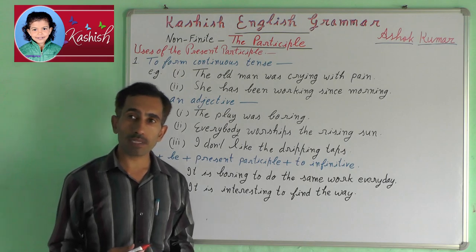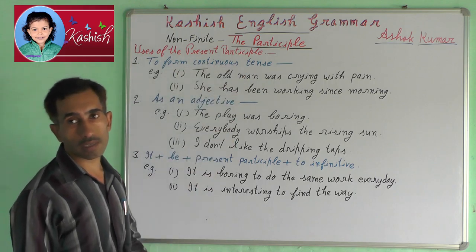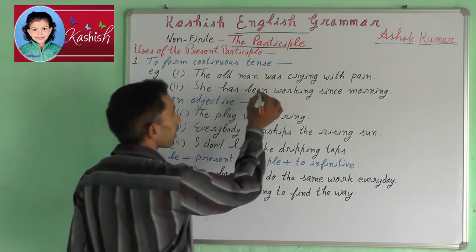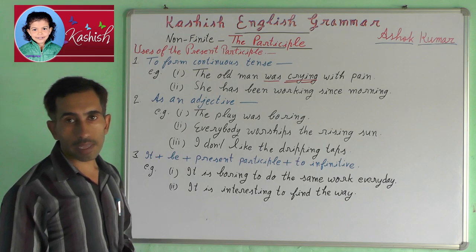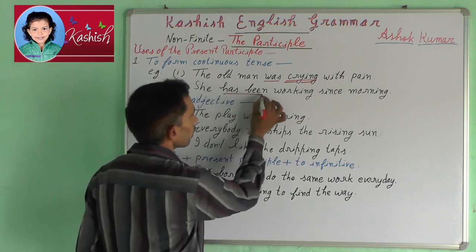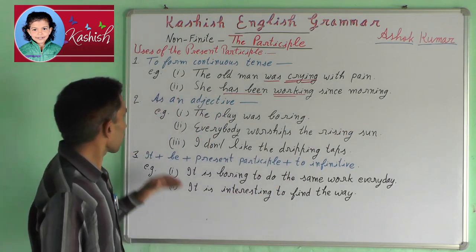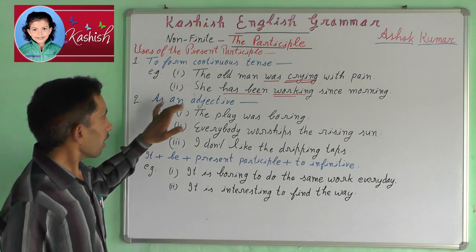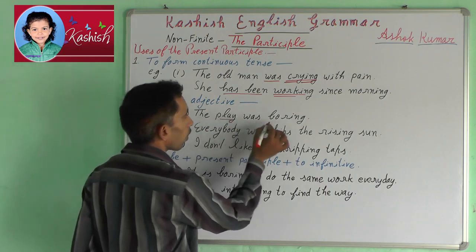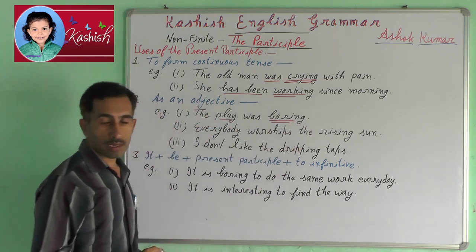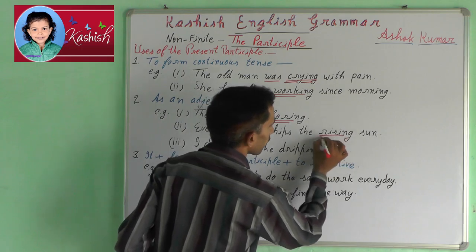Usage of the present participle. First, to form the continuous tense — for example: 'The old man was crying with pain.' Next: 'She has been working since morning.' Second, as an adjective — for example: 'The play was boring.' Next: 'Everybody worships the rising sun.'